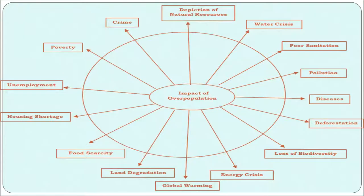This figure shows the impact of overpopulation. Overpopulation is the cause of pollution, diseases, deforestation, loss of biodiversity, energy crisis, food scarcity, housing problems and so on. This depicts how use and misuse of resources by the growing human population is having a tremendous impact on environment and human welfare.